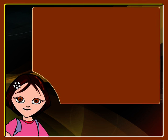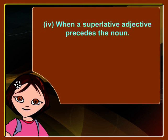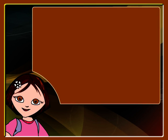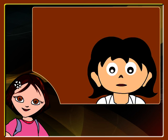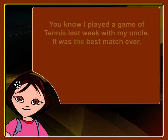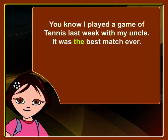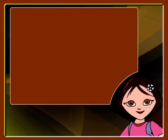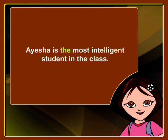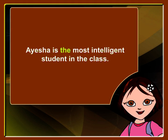The definite article can also be used when a superlative adjective precedes the noun. Rohini says: 'I played a game of tennis last week with my uncle. It was the best match ever.' In Rohini's sentence, definite article THE is used before the superlative 'best match.' Let us take another example: 'Aisha is the most intelligent student in the class.' The definite article THE has been used before the superlative 'most intelligent' here.